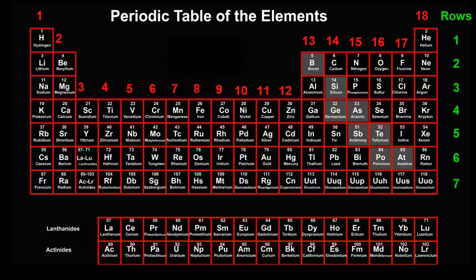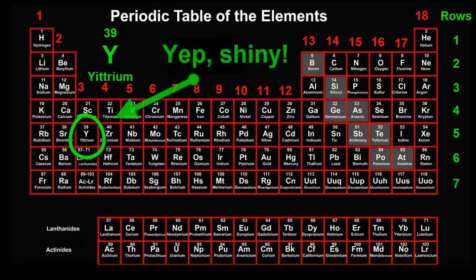Let's try something trickier. Do you reckon yttrium, atomic number 39, would be shiny? It's to the left of the diagonal line, so it's a metal. So it's probably shiny.